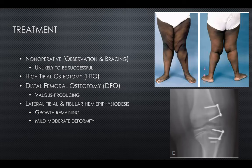Osteotomy options include high tibial osteotomy (HTO) to address the proximal tibia and distal femoral osteotomy for distal femoral deformity. Hemi-epiphysiodesis is a less invasive option: you tether the lateral physis so the medial physis can catch up and gradually correct the deformity over time. Indications require remaining growth potential — at least two years — and it is better suited for mild to moderate deformity. For severe angulation, osteotomy is preferred. Close clinical follow-up is essential to avoid overcorrection.